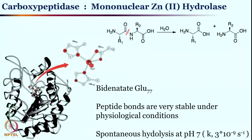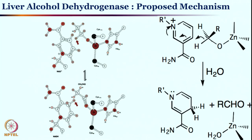We will now move to a new enzyme — carboxypeptidase. Once again it is a zinc enzyme. So far in our discussion we have covered three zinc enzymes: carbonic anhydrase, liver alcohol dehydrogenase, and now carboxypeptidase. Before discussing carboxypeptidase, let me go back once more to liver alcohol dehydrogenase to point out why excessive alcohol consumption is not a great idea.